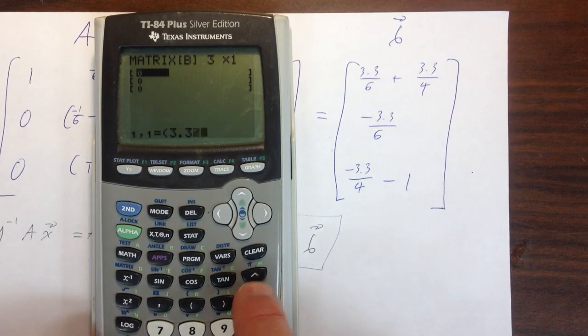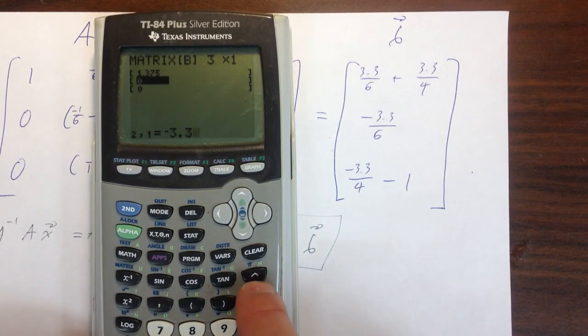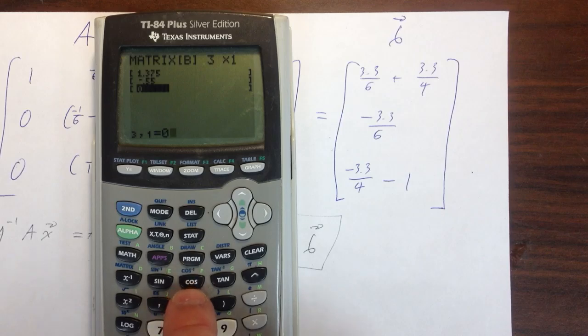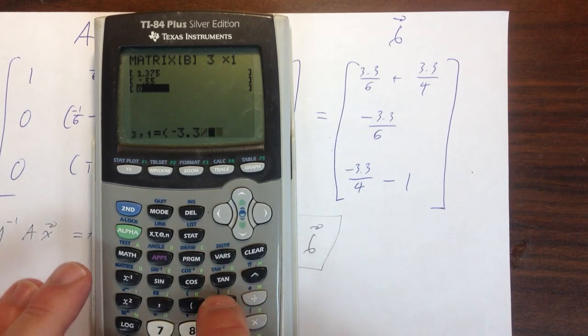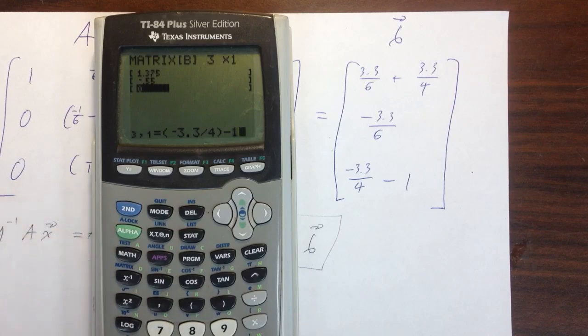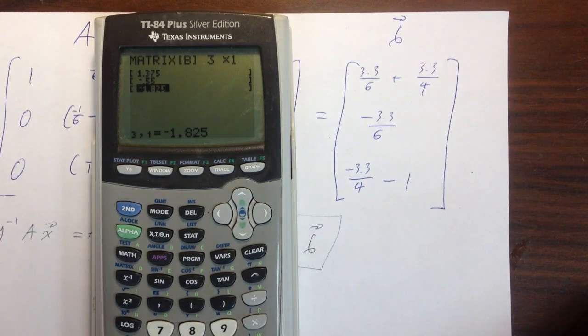I get 3.3 divide by 6 plus 3.3 divide by 4. That's the first one. Next I have minus 3.3 over 6, minus 3.3 divide by 6. And now for the last one I have minus 3.3 divide by 4 minus 1. That's it. I've got my B vector into the calculator.